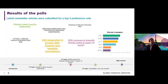Another topic is on the ECB's avenues to intensify climate action in quest of punch. And the last one, but not the least, ESG integration in private debt towards data template convergence. We'll start with the one on biodiversity, the second will be the ECB one, and the third will be ESG integration in private debt.